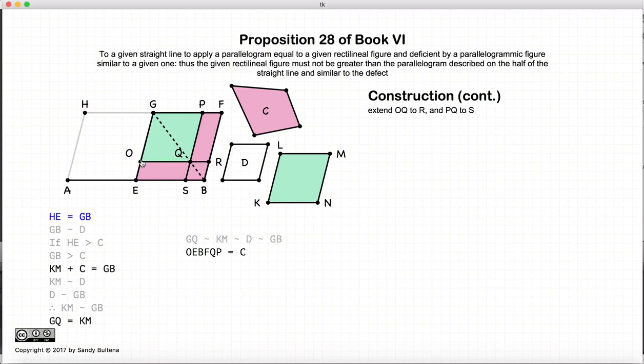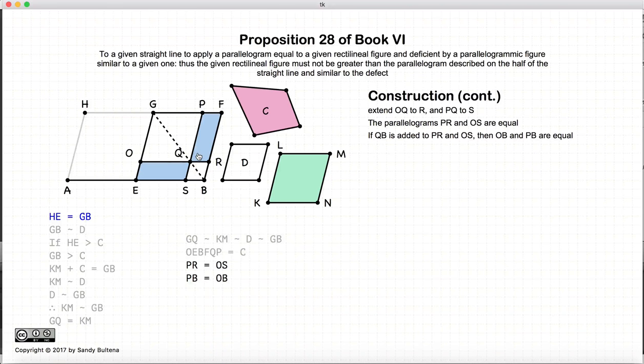Now we're going to extend the lines from OQ to R and PQ to S. PR is equal to OS, because they are complementary parallelograms along a diagonal. Now if PR is equal to OS, then PB is equal to OB, because we're just adding this little parallelogram to both of them. So we have that PB is equal to OB.